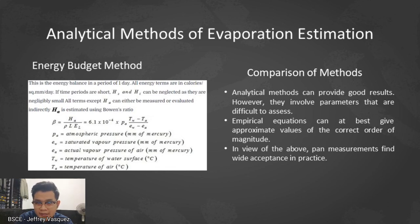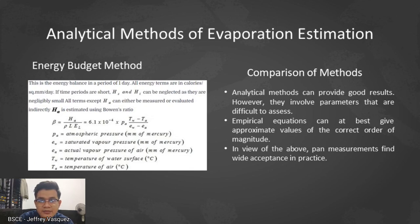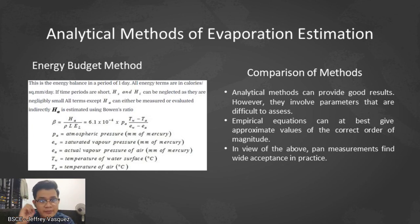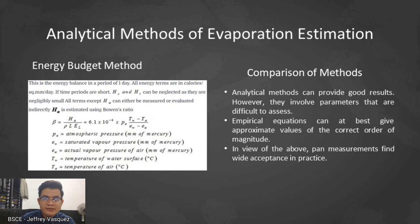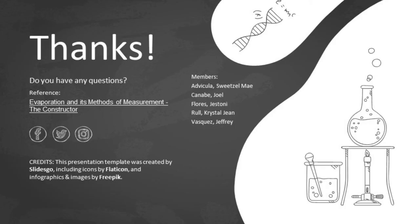All terms except HA can be measured or evaluated indirectly; HA is estimated using the Bowen ratio. In comparison of methods, analytical methods can provide good results but involve parameters that are difficult to assess. Empirical equations can at best give approximate values of the correct order of magnitude. In view of all the above, pan measurements receive wide acceptance in practice.